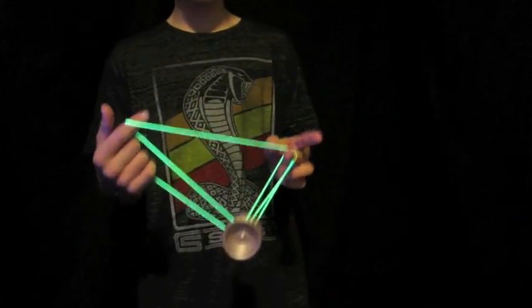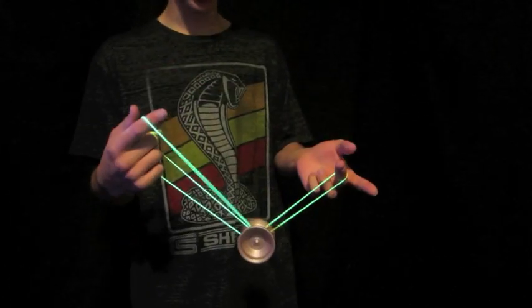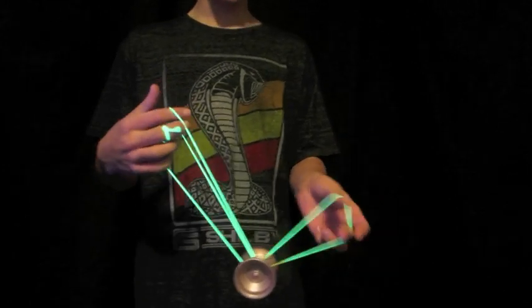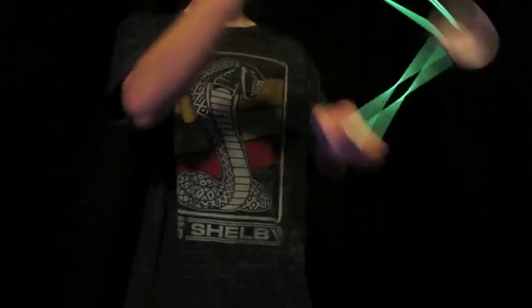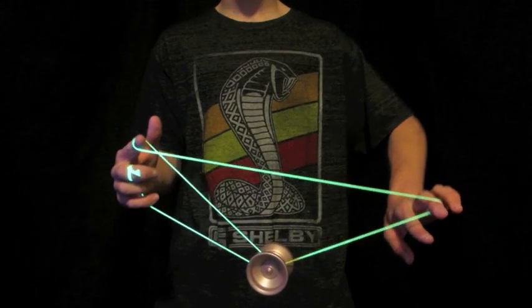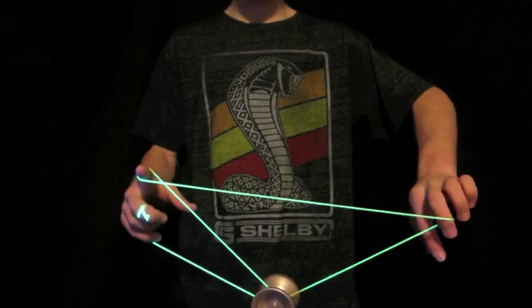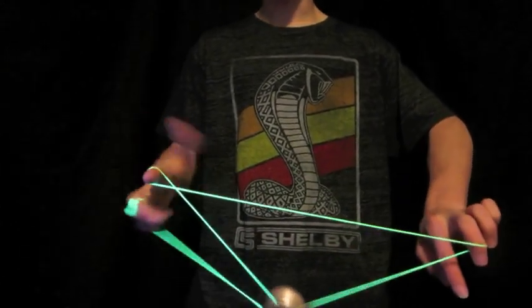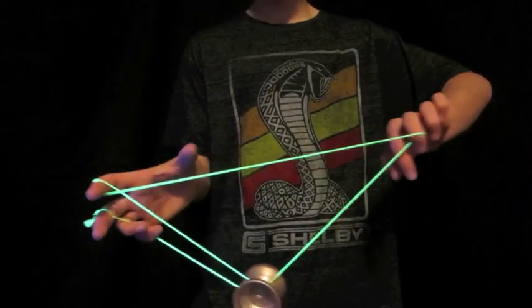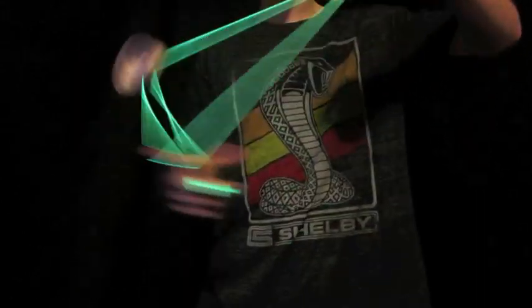From here, the rest of the trick is pretty easy. You just want to drop the string off of there, and you want to rotate this hand like that so you basically unwrap the loop that was around the string.